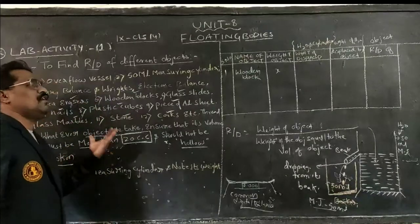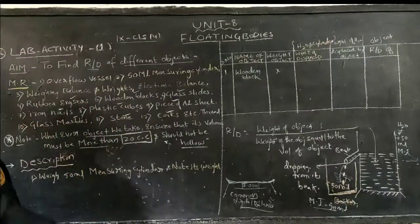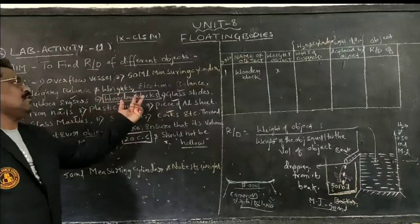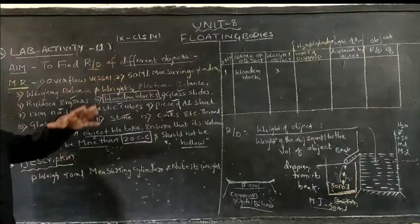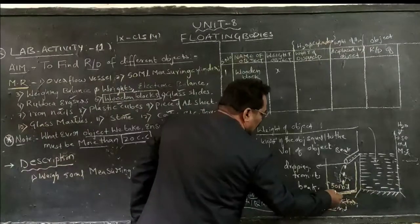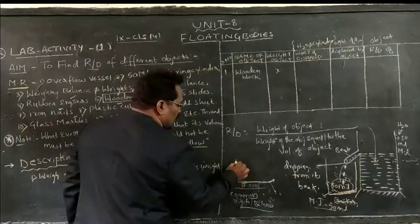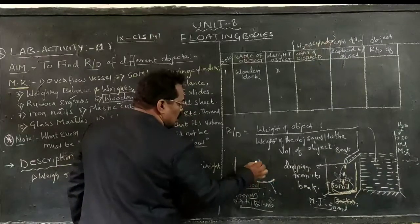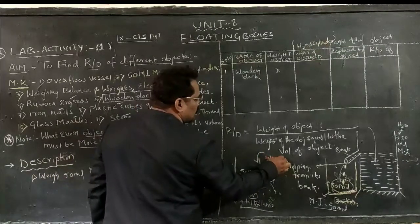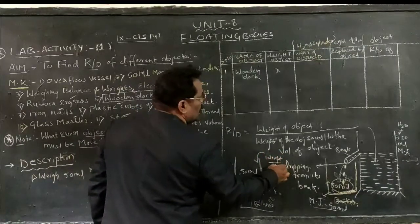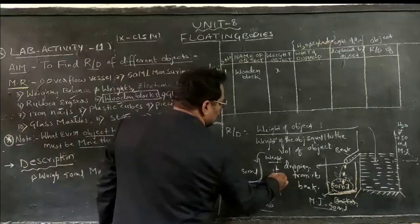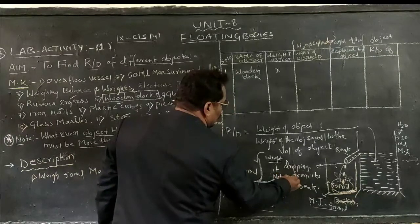Now the procedure. I would like to calculate the relative density of a wooden block. First, take the measuring jar of 50 ml. Keep it on a common balance and weigh it. Note down the weight of the empty measuring jar.